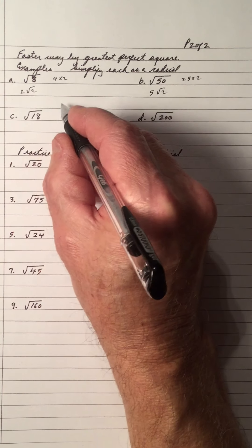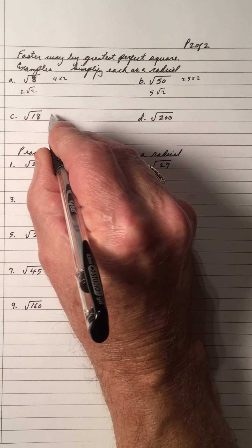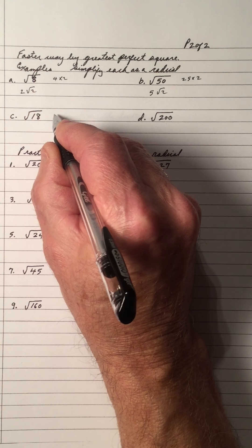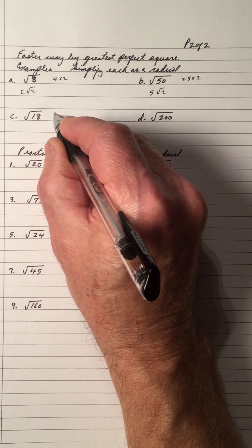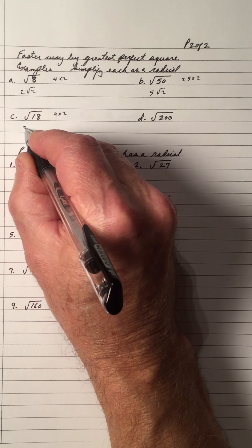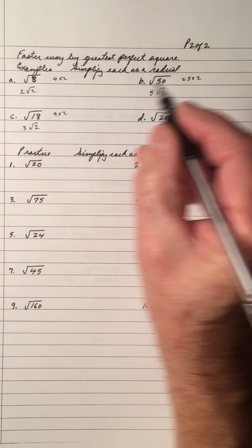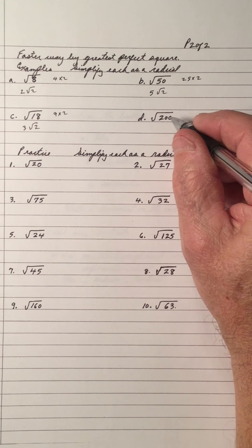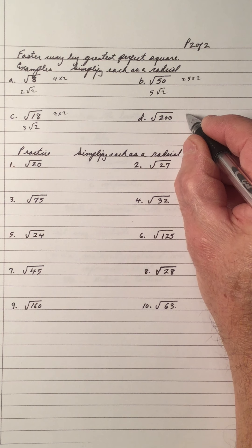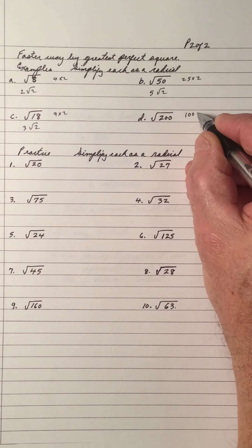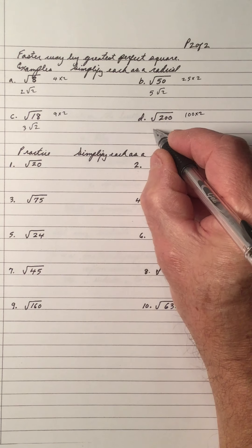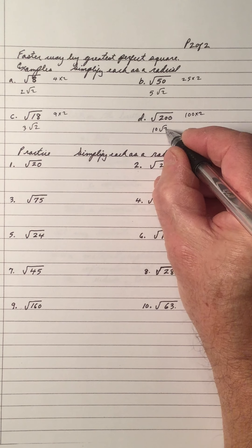The square root of 18, the largest perfect square is 9 times 2. So the square root of 9 is 3 root 2. And you have 200. So the largest perfect square of 200 is 100 times 2. So it's 10 root 2.